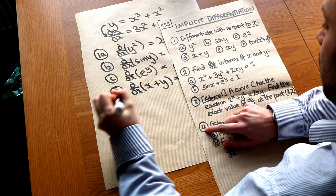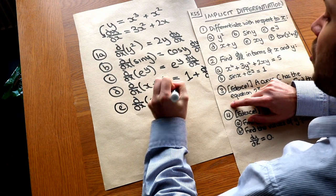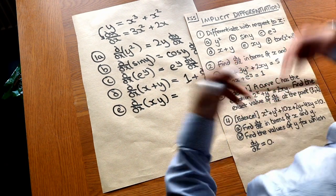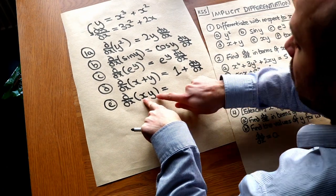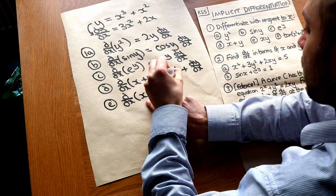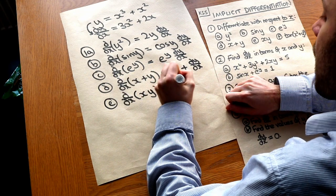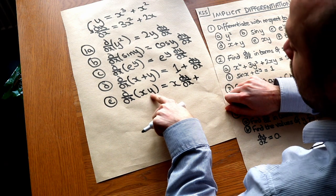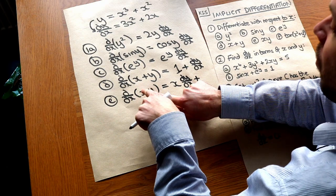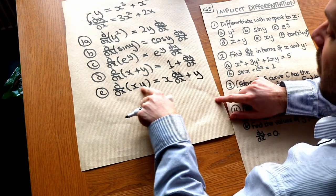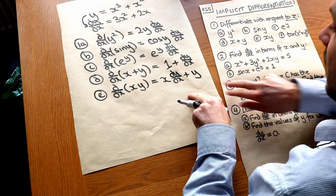Now this is an interesting one — what happens if we differentiate the product xy? Remember to differentiate a product we have to use the product rule. We take the first thing and multiply by the second thing differentiated, so we've got x times the y differentiated which is dy over dx. Then we do it the other way around and add it: we keep the y as it is, so it's y times the x differentiated, which is y times 1, just y. So when we differentiate xy with respect to x we end up with x dy over dx plus y.